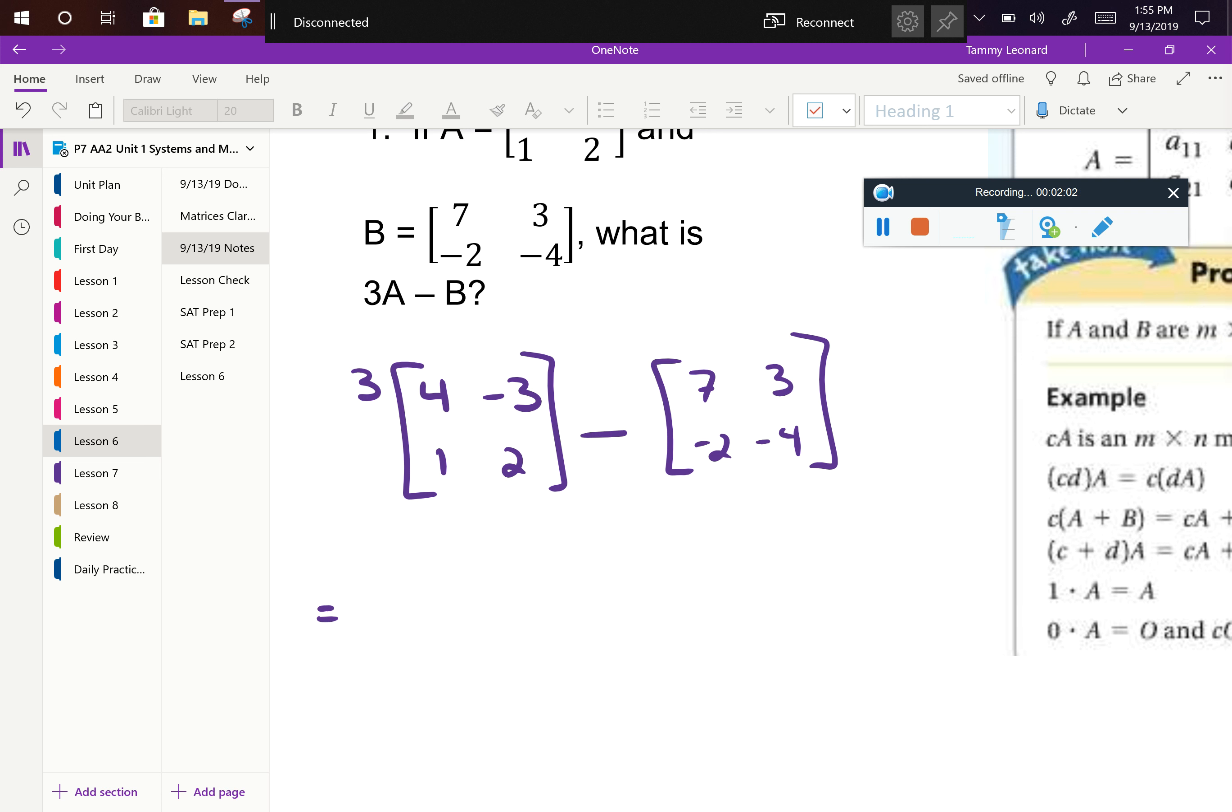So we're going to start by tripling the first matrix. So what does the first matrix become? Claudia? 12, negative 9, 3, 6. So 12, negative 9, 3, 6, and we are still subtracting matrix B.